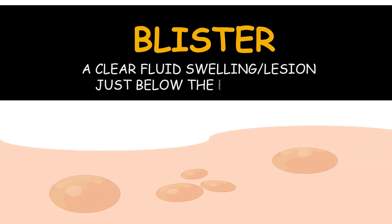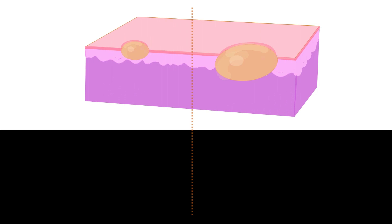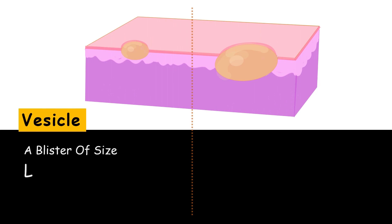A blister is a clear fluid swelling early on and just below the epithelium. Blisters may be divided into two categories: a vesicle is a blister of size less than 0.5 millimeters.